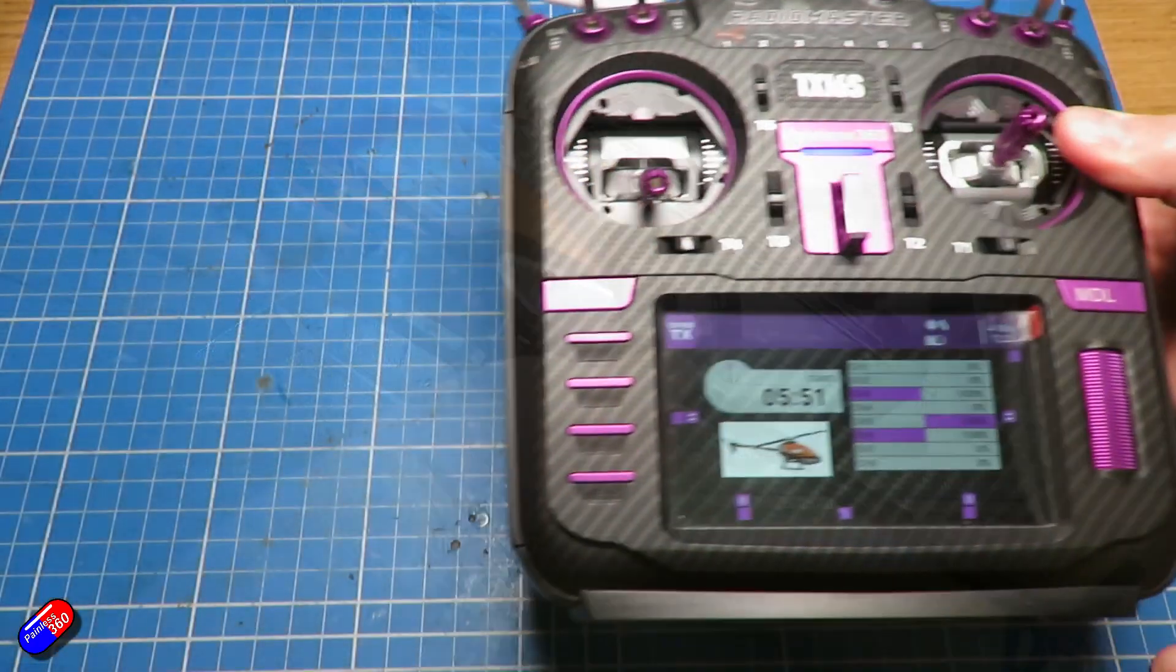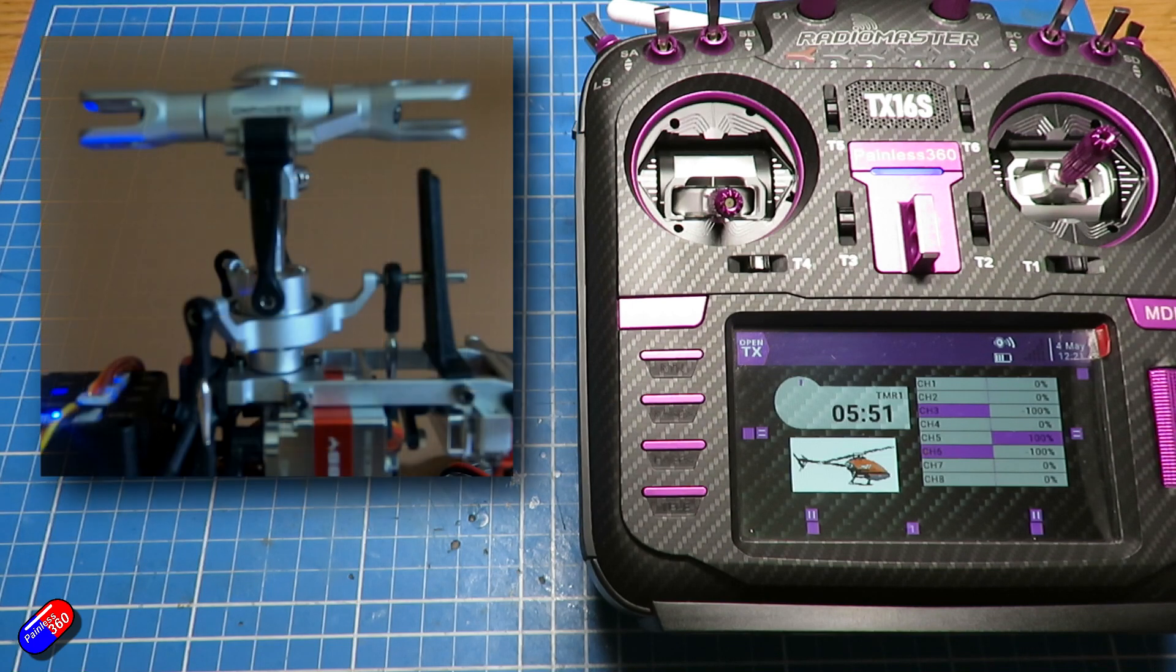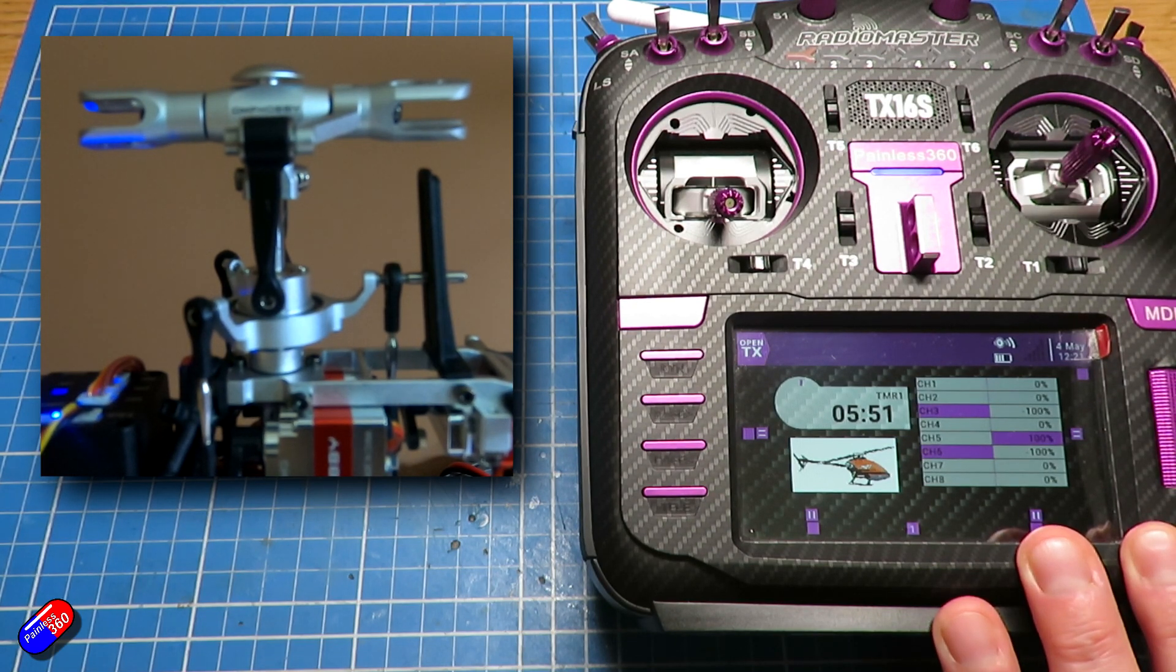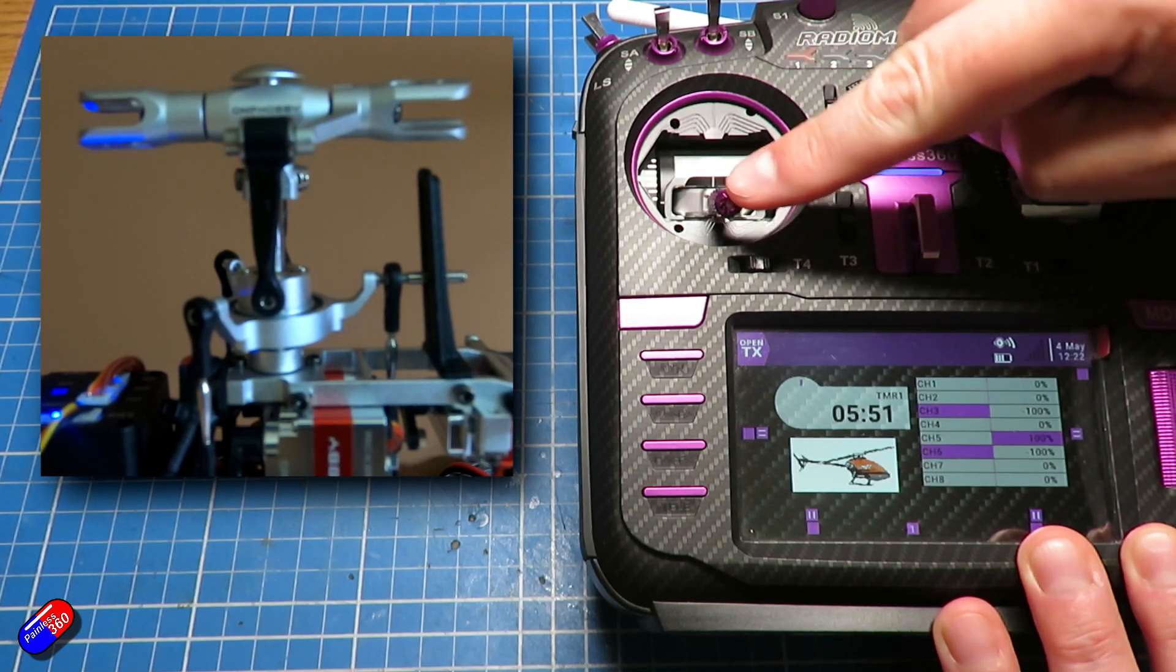So if I move the radio over to the side here, let me just insert a picture, a close-up of the head of this particular helicopter, again with the blades removed because we don't want to accidentally start everything. The radio at the moment is in idle up, which gives us the maximum range of movement in the swash. As I raise the throttle, watch what happens to the swash plate.